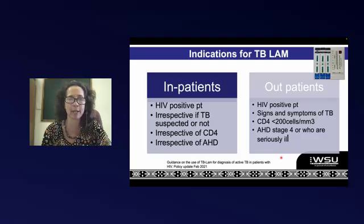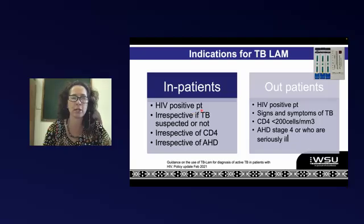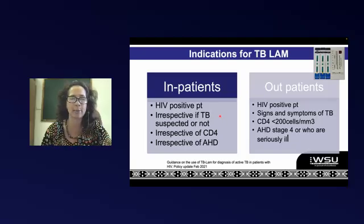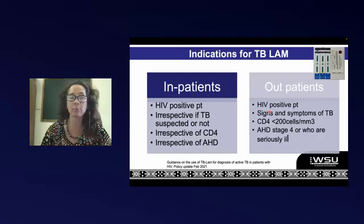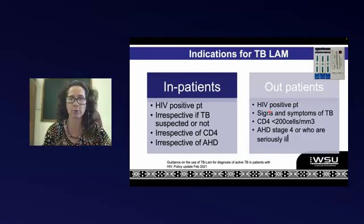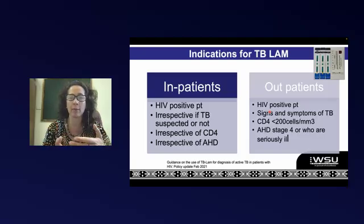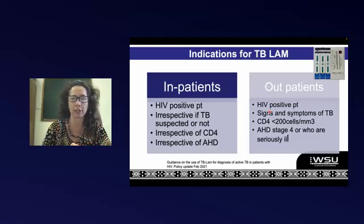These are our indications for TB LAMs. Most district hospitals do have access to these. For inpatients, you have to be HIV positive, but we don't have to be too fussy — we can use TB LAM as a screening tool regardless of TB symptoms, regardless of CD4 count, and irrespective of whether they have advanced HIV disease. For outpatients we are a little more fussy, mostly to save money: the patient must be HIV positive, have signs and symptoms of TB, and have a CD4 cutoff of 200. Some still use 100, but at 200 you can do the LAM. If you don't know the CD4 and the patient presents with advanced HIV disease stage 4 or is seriously ill, you can also do a TB LAM.